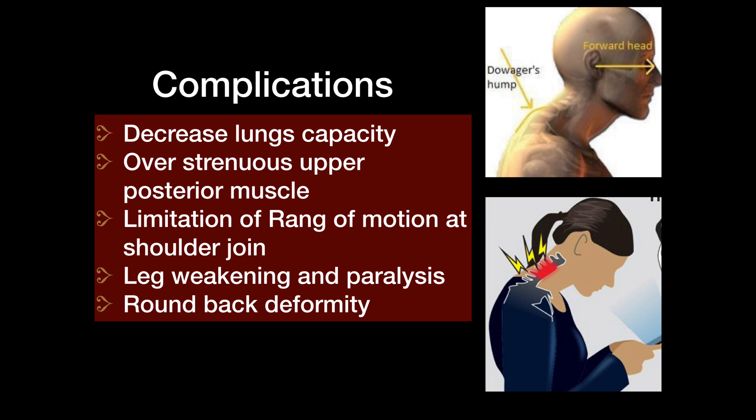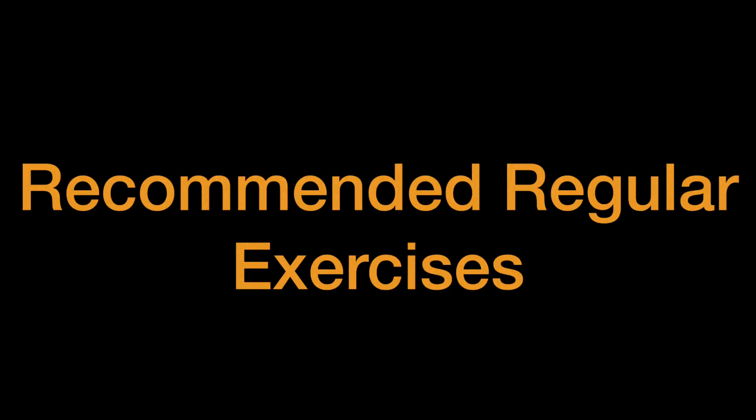Kyphosis shrinks down the thoracic region, impacting lung capacities. The posterior muscles get overused, fatigue, and reduce their potential. The range of motion at the joints decreases. Because of the sedentary acquired posture, nerves somewhere get compressed, which may impact circulation and further lead to the lower limbs or lower parts of the body becoming paralyzed.